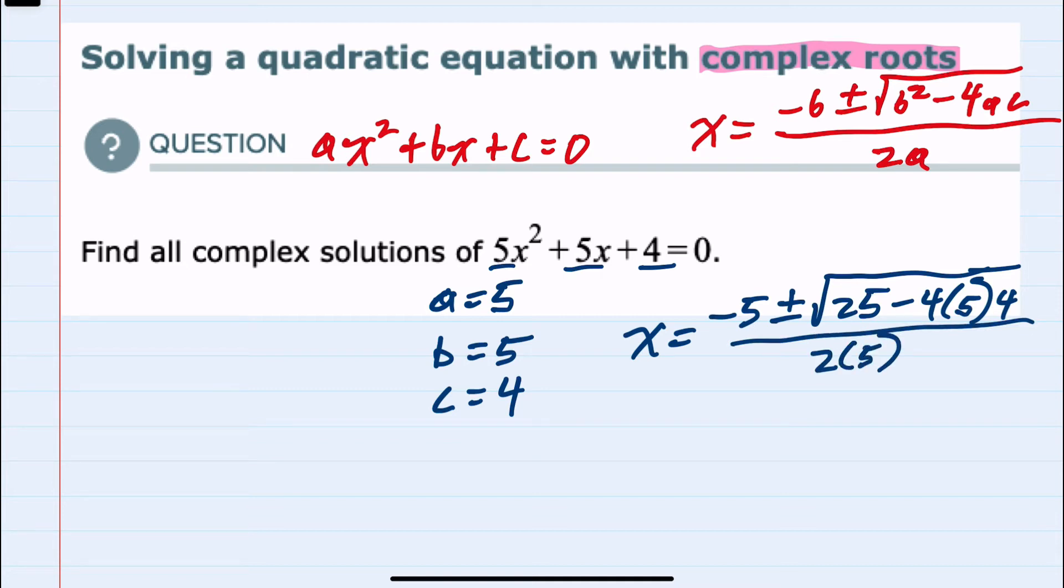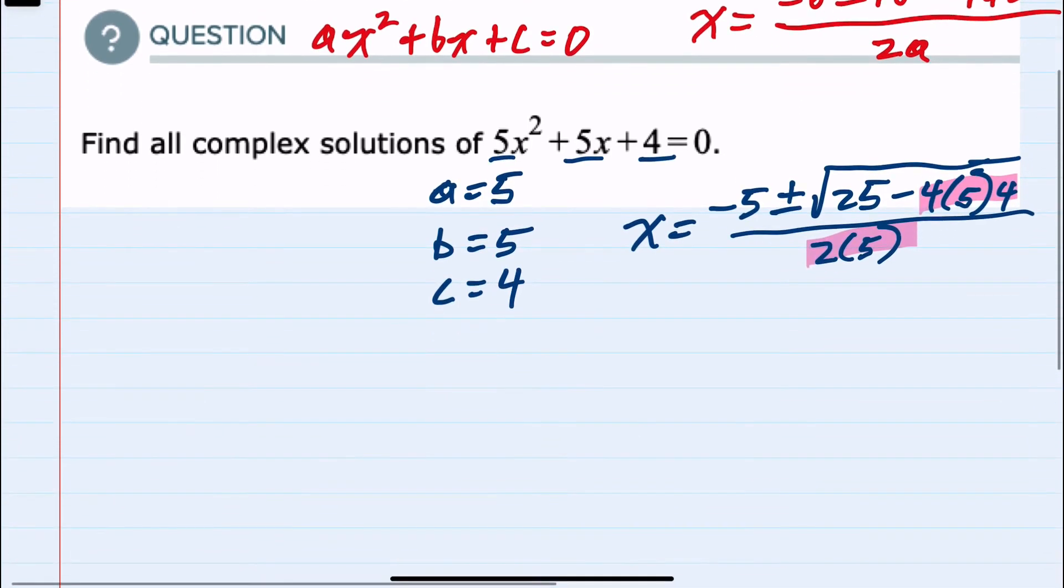Having made the substitution, we can begin to simplify first by simplifying the multiplication, so that we have x equals negative 5 plus or minus the square root of 25 minus 4 times 5 is negative 20, times 4 is negative 80, over 2 times 5, which is 10.